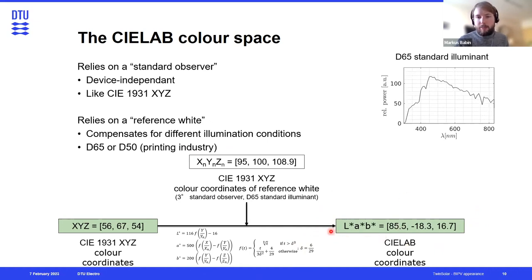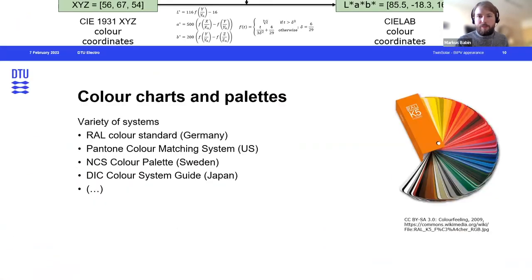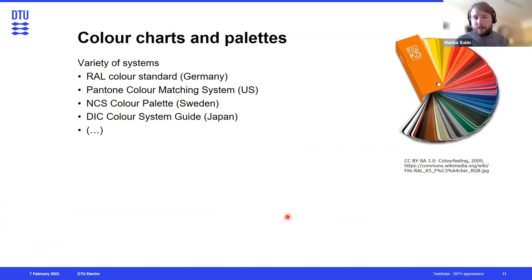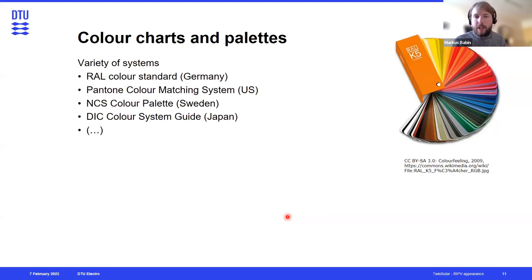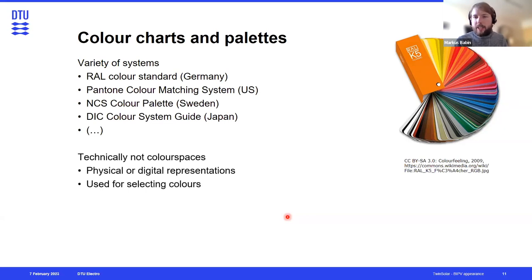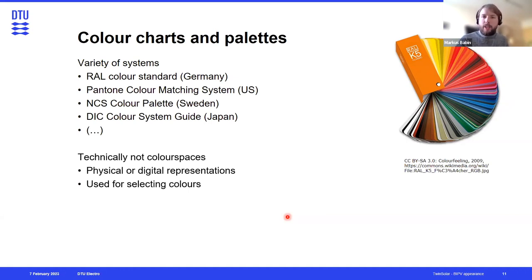Before we get to interpreting LAB values, you might be more familiar with some other color systems or palettes, like the RAL system in Germany or the Pantone color matching system, which annually publishes its color of the year. But these are not actually color spaces — they do not provide a way to describe any color out in the world. They are mainly databases containing a limited number of colors with physical or digital representations, used for selecting colors.